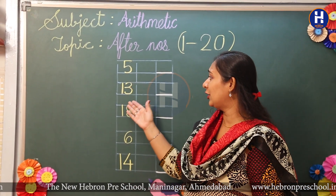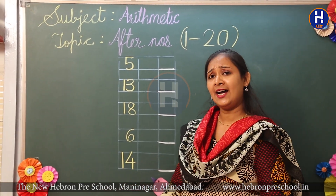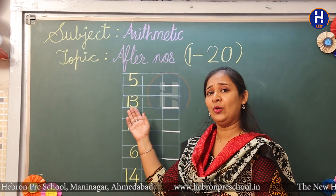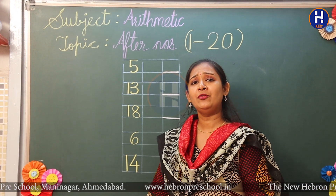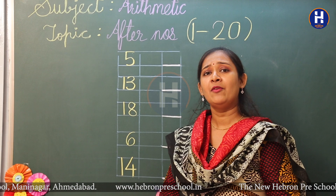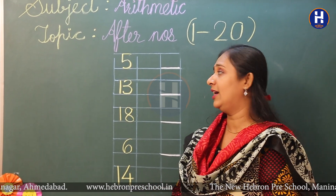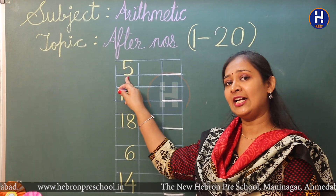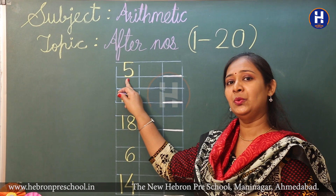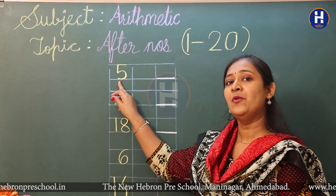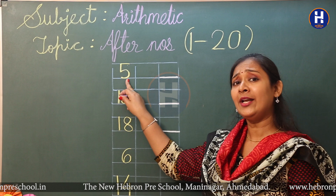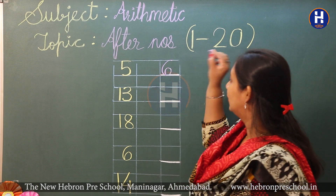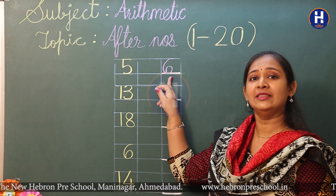Now I have written a few numbers on the blackboard and we will guess the after number — uska after number bolenge hum log. But before writing the number we have to say forward counting — hame forward counting karna padega. Which number is this? Yes, it is five. So let's start from number one: one, two, three, four, five. What comes next? Yes, after five it is number six.